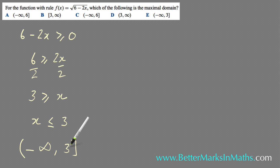If you pick a number greater than 3, such as the number 4: 2 times 4 is 8, 6 minus 8 is minus 2, and you can't take the square root of that—not in Methods. In Specialist there is an answer, but that's a different branch of mathematics. You can always test your answer.